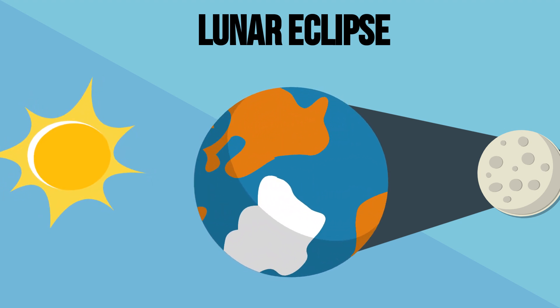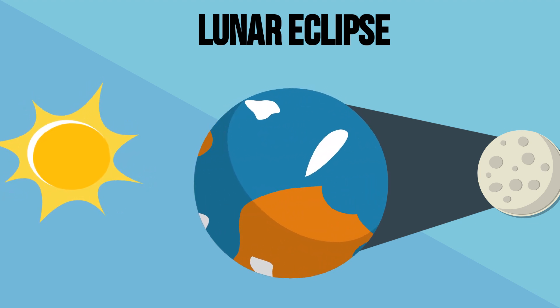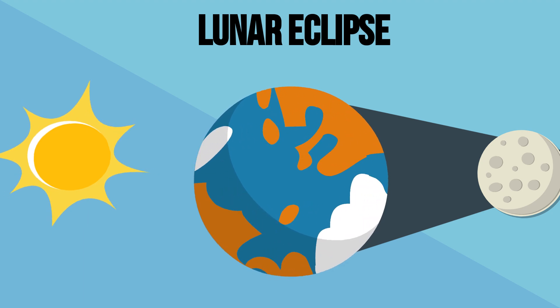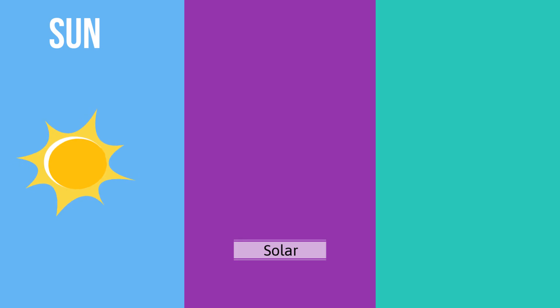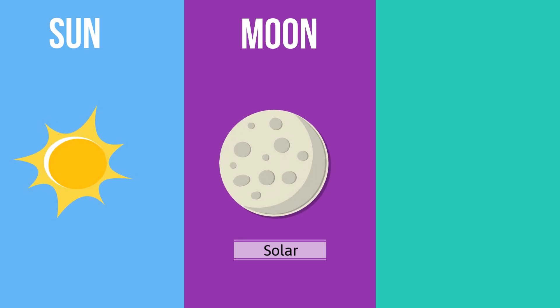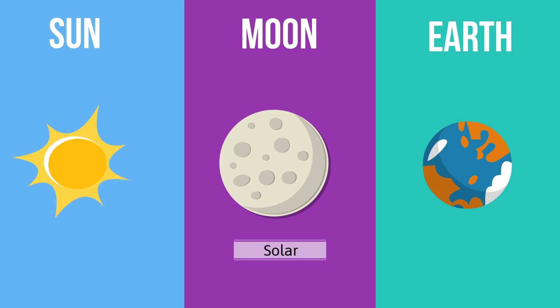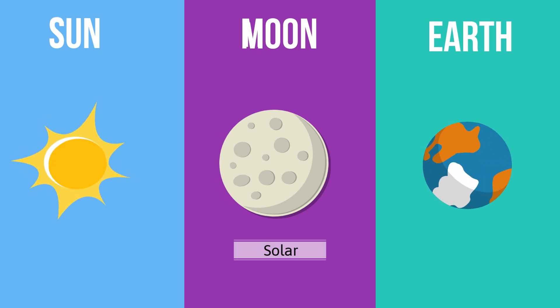Let's talk about a couple of ways to help you remember the difference between a solar and lunar eclipse. The order of the celestial bodies during a solar eclipse is the sun, moon, and earth, or SME.